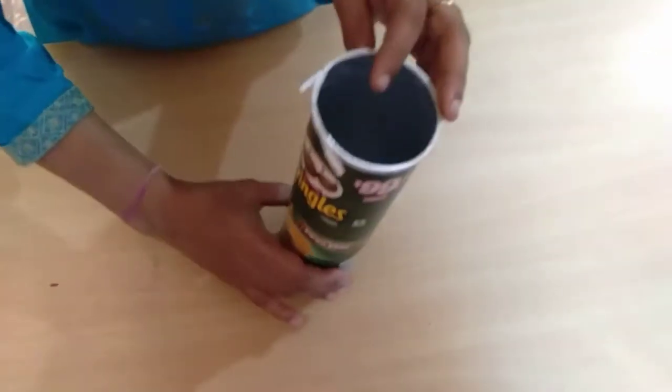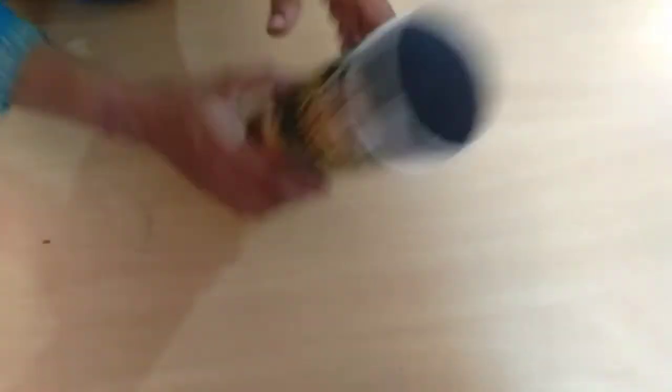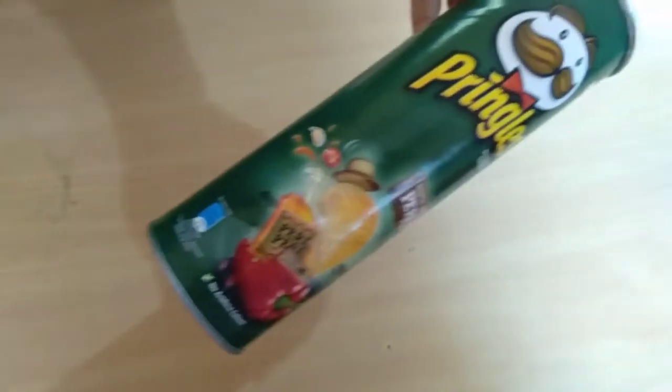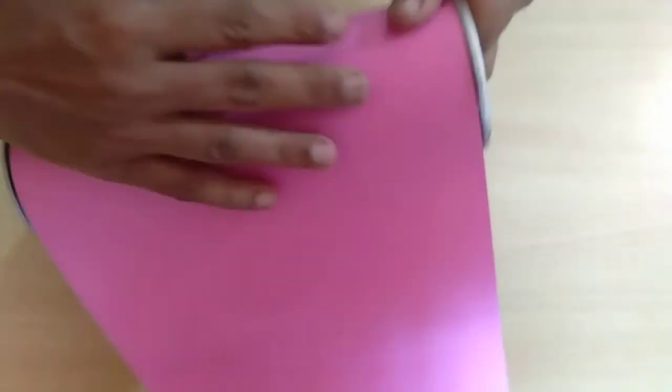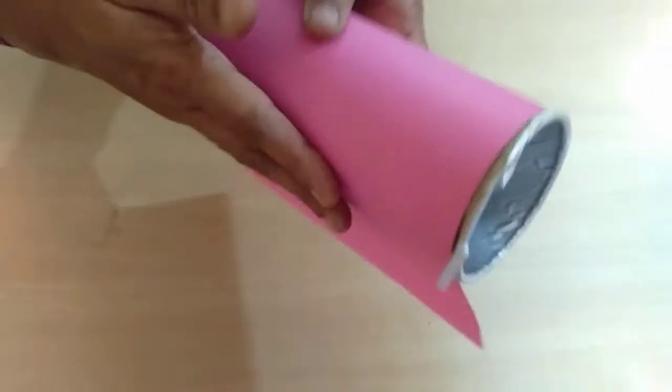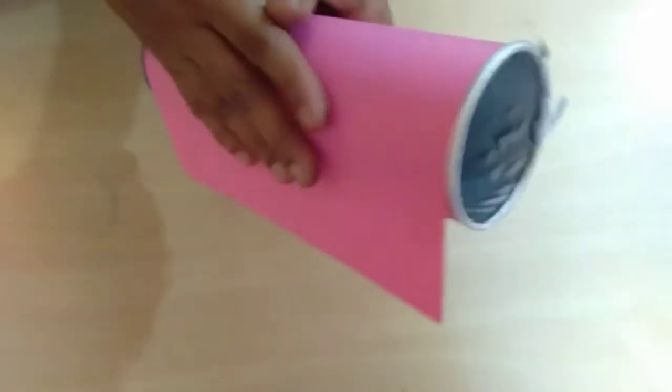Today we are going to do a paper vase. Take an empty box, put glue on top of it, and paste a paper, whichever color you want. We are going to paste pink.